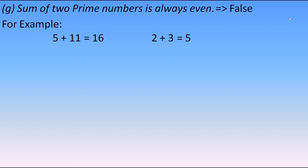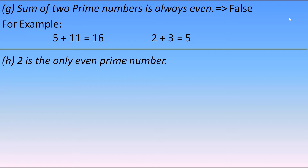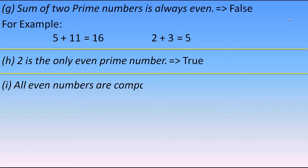Next statement: 2 is the only even prime number. This is true — just because of 2 being even, we couldn't say all prime numbers are odd in the previous statement. Next statement: all even numbers are composite numbers. Since 2 is an even prime number, not all even numbers are composite. So this statement is false.